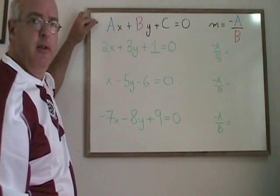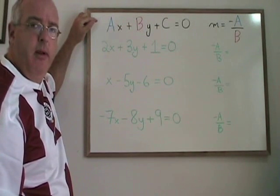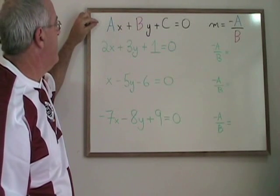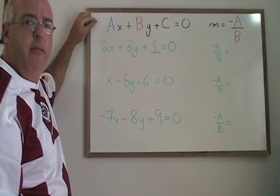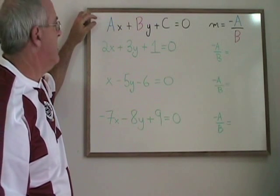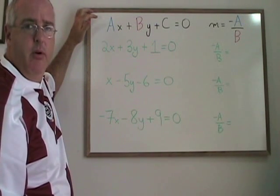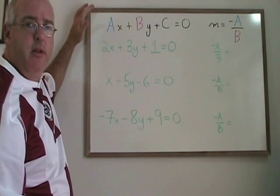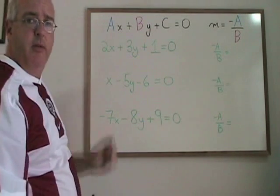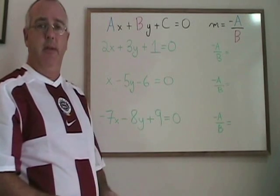This form of the equation is often called general form, but I have seen source materials that refer to it as standard form, and there might be other names as well. So consult your local textbook or teacher to make sure that you're using the right terminology, and I will just refer to it as ax plus by plus c equals 0.